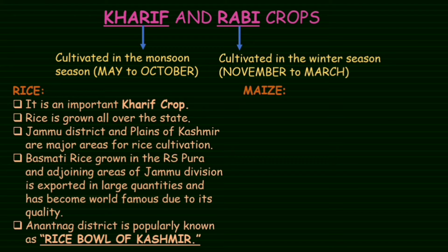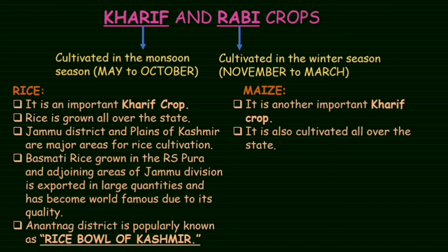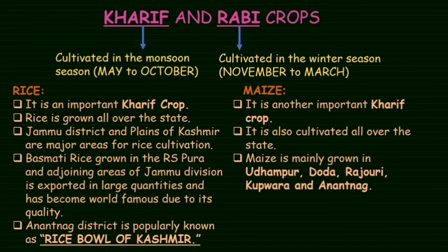Now, maize. Maize is the second important crop that grows in our state. It is another important food crop and is cultivated all over the state. Maize is mainly grown in Udhampur, Doda, Rajouri, Kupwara, and Anantnag districts.